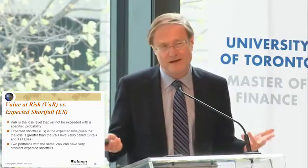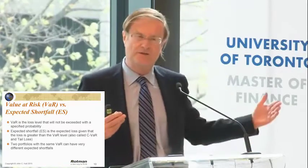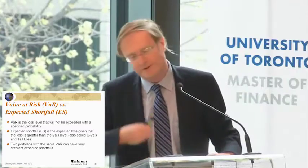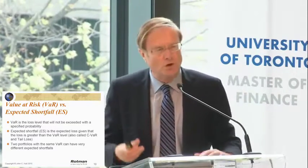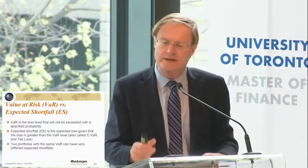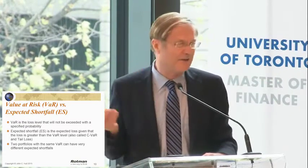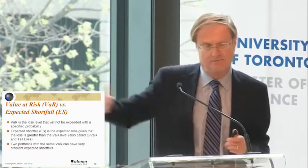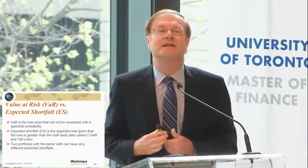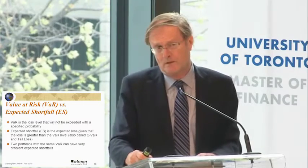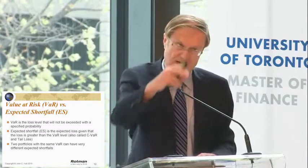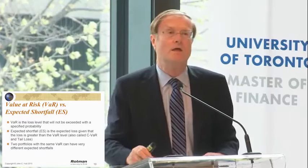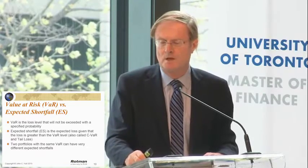One way of thinking about that is you're just asking the simple question: how bad can things get? We know all sorts of horrible things could happen, so you have to define some confidence level and some time horizon. You're asking what's the percentile of the distribution that corresponds to that confidence level — which, as we said, was 99% for the original Basel capital requirements.